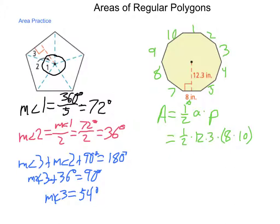So we end up with one half of 12.3 times 80. Doing a little bit of commutative property, half of 80 is 40 times 12.3, and we come up with an area on this figure in square inches of 492. So, to find that perimeter, find the length of one side and multiply it by the number of sides, and it's just one half apothem perimeter after that.